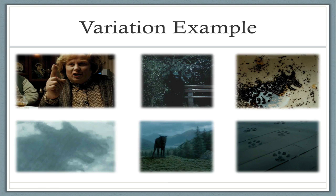Toward the end, as the kids are exploring the Whomping Willow area chasing after Ron's lost rat, there seems to be a dog right there. He grabs Ron's leg and drags him under the Whomping Willow. And then the final variation is not the dog itself, but just dog footprints — inside the Shrieking Shack after they have finally found Ron after he's been dragged through the tunnel. We don't see the dog's face; we just see the footprints of a dog.